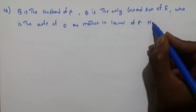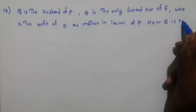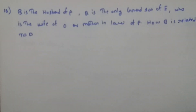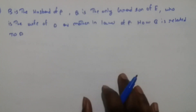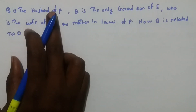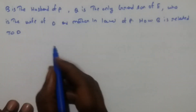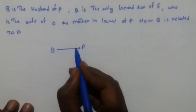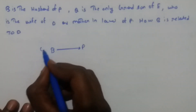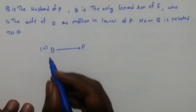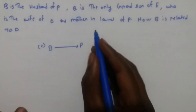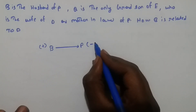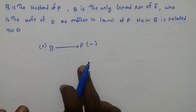The question is: how is B related to D? Now, B is the husband of P. Husband means male, so B is male. Since B is the husband of P, P is automatically the wife — we denote that with a minus sign.